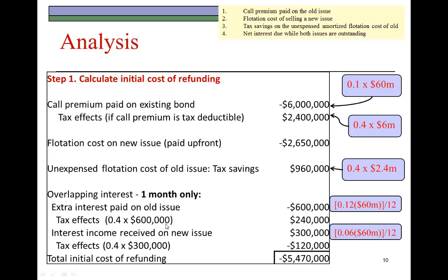On the flip side, by keeping the new loan in a marketable security paying 6% per annum, the company earns $300,000 in interest income. That's 6% of $60 million equaling $3.6 million — wait, $5.4 million per year — divided by 12, giving monthly interest income of $300,000. Being interest income, there's a tax effect: we pay $120,000 in taxes (40% of interest income). Summing all these items gives a net initial cost of $5.47 million.